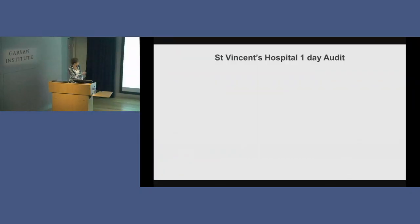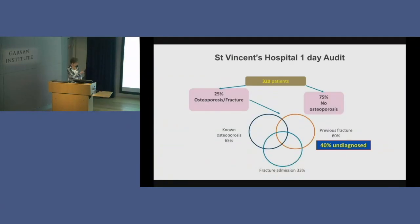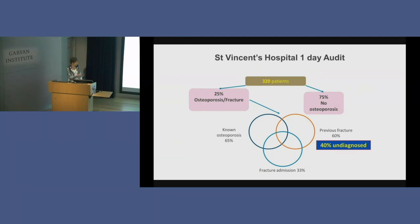We conducted an audit at St. Vincent's Hospital last year. We looked at all the patients in the hospital on one day, and what we found was that 25% — a quarter of all the patients — had either come in for a fracture or had osteoporosis or a prior fracture, essentially at high risk of fracture. That's a quarter of the patients in the hospital — the same number who have diabetes. It is not an uncommon problem. Of those people with osteoporosis or fracture, a third actually came in with a fracture, and 60% had had a prior fracture — so there'd been some signal that something had been going on. Of those patients, 40% were undiagnosed. That is really a microcosm of what happens in general society.